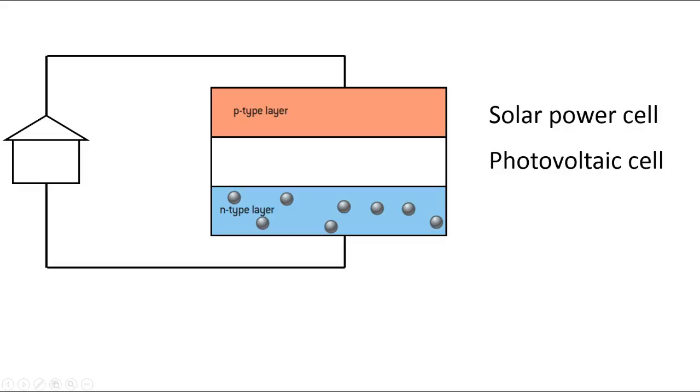This is called a solar power cell or a photovoltaic cell. And what are we doing? We're taking the solar energy of the photon and converting it into electrical energy.